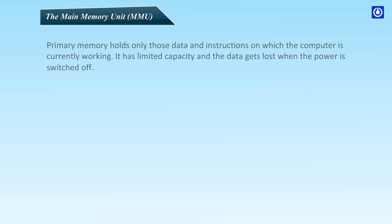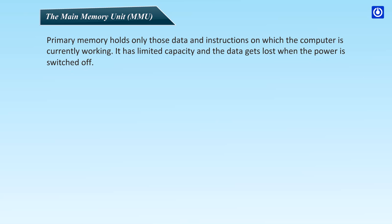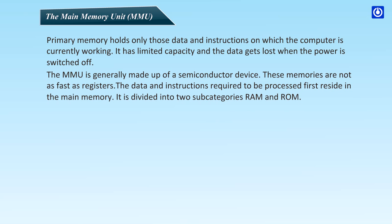The Main Memory Unit (MMU): Primary memory holds only those data and instructions on which the computer is currently working. It has limited capacity and the data gets lost when the power is switched off. The MMU is generally made of a semiconductor device. These memories are not as fast as registers. The data and instructions required to be processed first reside in the main memory. It is divided into two subcategories: RAM and ROM.